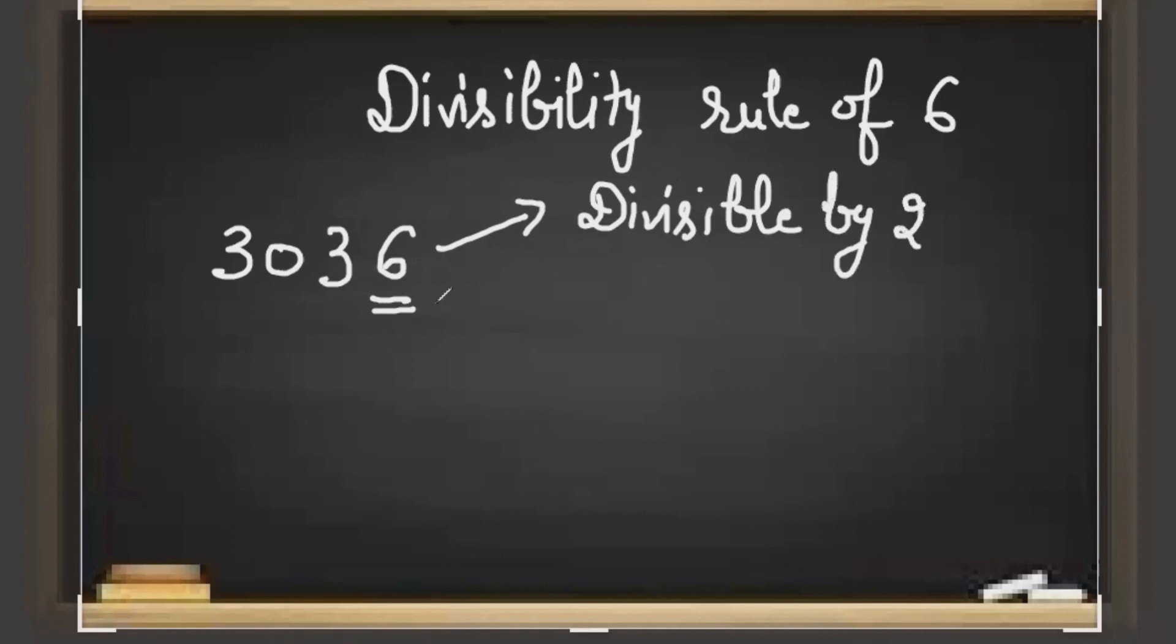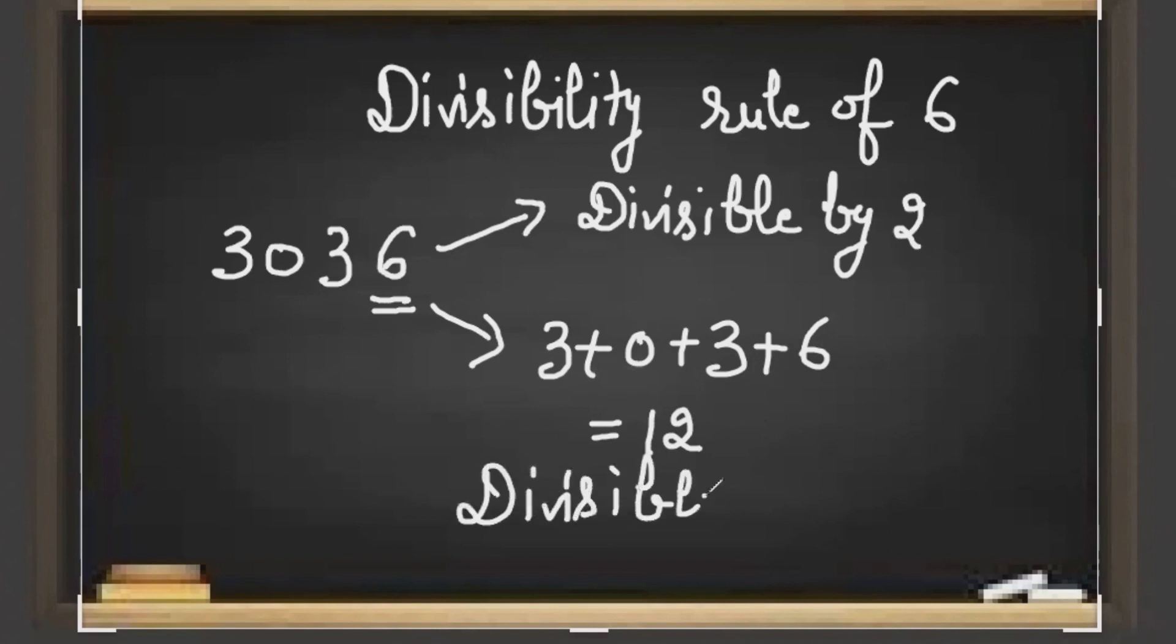If I add the digits of 3,036, I get 12. That means 12 comes in the table of 3, so 3,036 is divisible by 3. Since 3,036 is divisible by 2 as well as 3, that means it is divisible by 6 also.